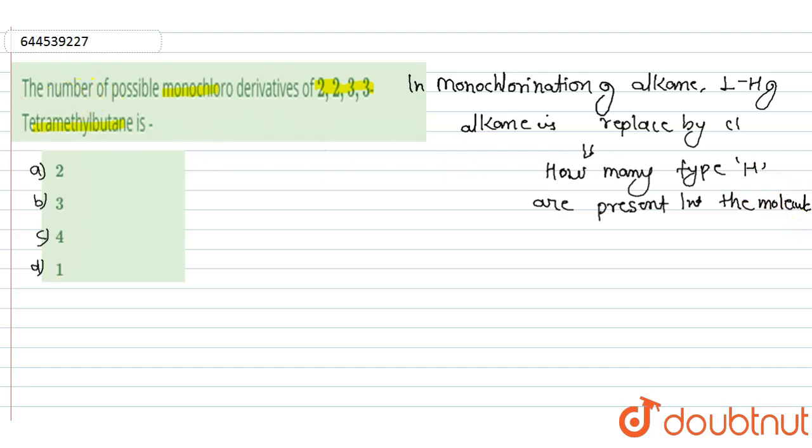So what is the structure? What is the overall structure? 2,2,3,3-tetramethylbutane. Butane means four carbon: 1, 2, 3, 4. If you are numbering 1, 2, 3, 4.